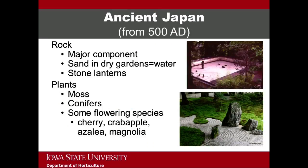Japanese gardens are similar to Chinese gardens in their extensive use of rock. The stones may be large and used as specimens or massed together. Most Japanese gardens have a dry garden where the small gravel-like stones are raked into various patterns to represent water. These dry gardens also have symbolic rock formations representing religious teachings and other culturally significant events. Stone lanterns are also found throughout Japanese gardens and they often have symbolism associated with the size and shape of the lantern as well as its placement within the garden. Moss is the most prevalent plant species in Japanese gardens. It is used to cover most every ground surface.